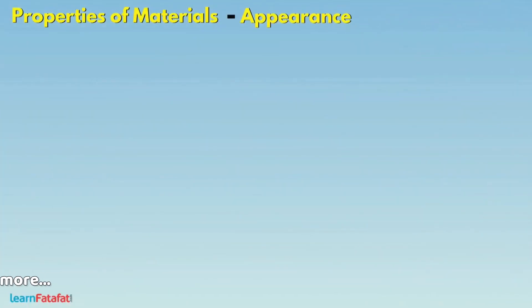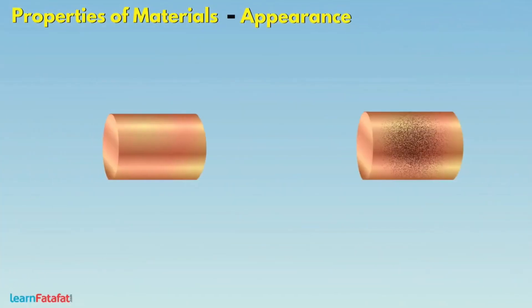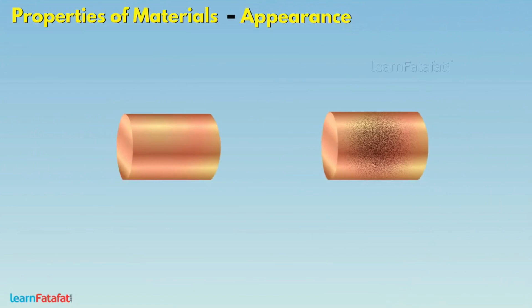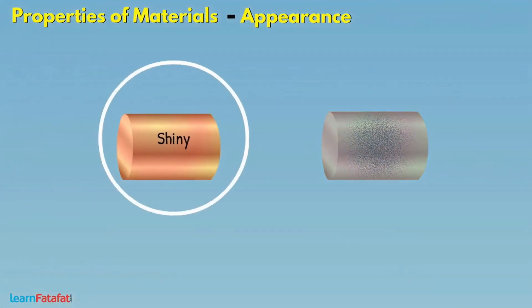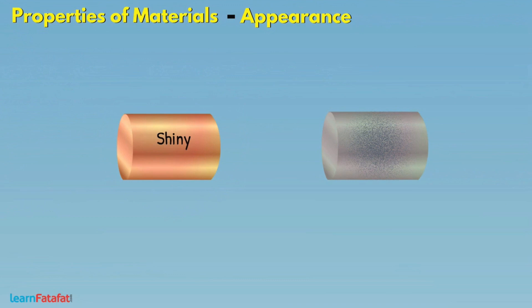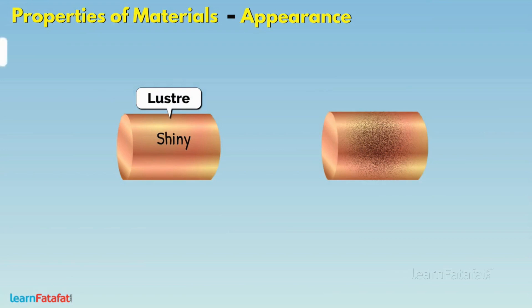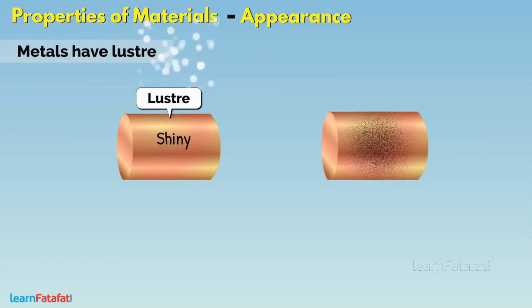Appearance: It gives an idea about the visual look of the material. If a material appears shiny, then we say that it has a property called lustre. Usually, metals have lustre.